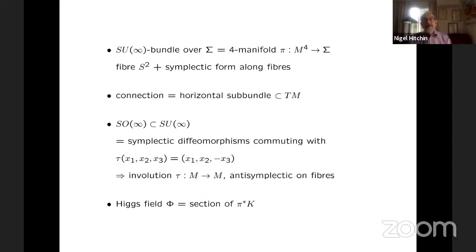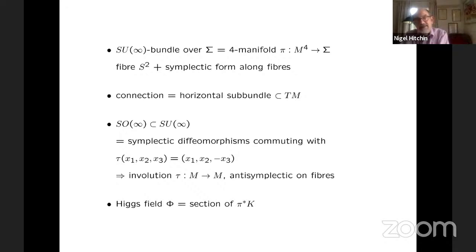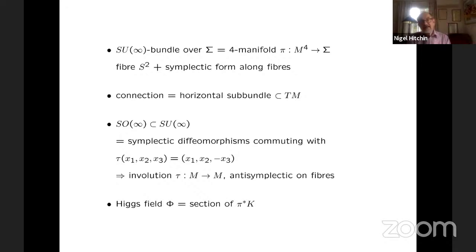So a connection on this is a horizontal sub-bundle — a Diff(S²) connection. If we want it to be a symplectic connection, then we want the horizontal lifts of vector fields to preserve the symplectic form along the fibers. But if we want to take an analog of this infinite-dimensional Teichmüller space, then we should reduce this to SO(∞). So what is SO(∞) sitting inside SU(∞)? I claim that this should be the symplectic diffeomorphisms which commute with reflection about an equator.